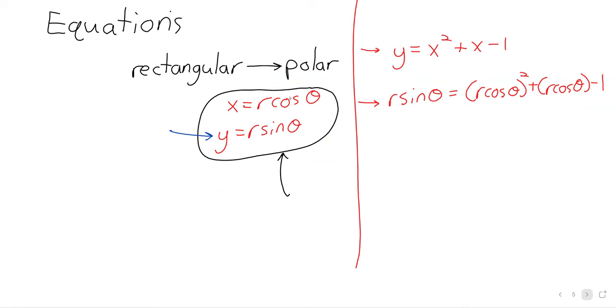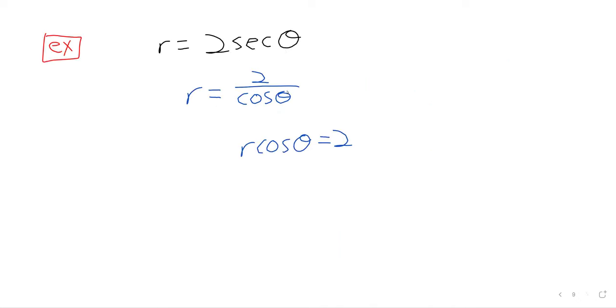And then we say, wait a minute, R times the cosine of theta. I recognize that R times the cosine of theta is X.